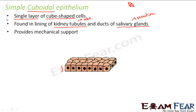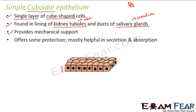Simple cuboidal epithelium also provides mechanical support. Since it is a little stronger compared to simple squamous epithelium, it can provide some support. Simple squamous epithelium was very thin and flat — itself very delicate — and therefore could not give much protection. But simple cuboidal epithelium can give some mechanical support. It offers some protection, is mostly helpful in secretion and absorption, and at least gives better protection than simple squamous epithelium.